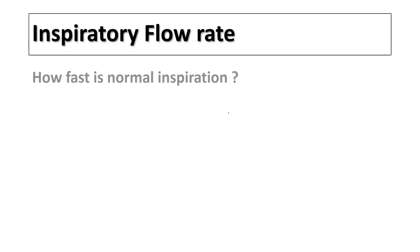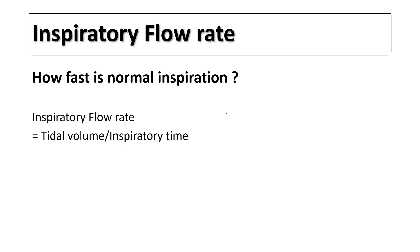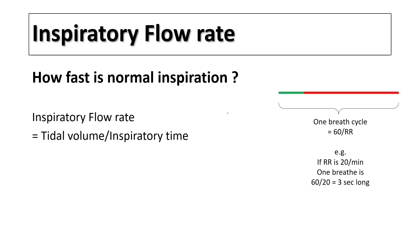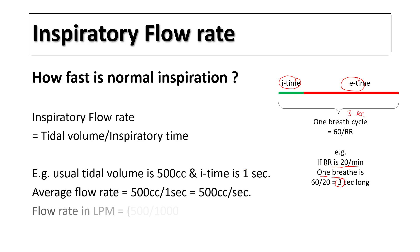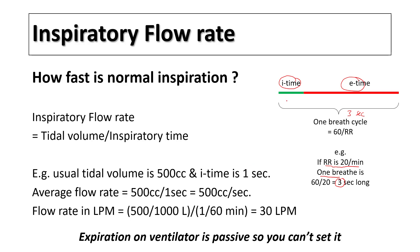Inspiratory flow rate is how fast you take the tidal volume, so inspiratory flow rate equals tidal volume divided by inspiratory time. This represents your breathing cycle, constituting your inspiratory time and your expiratory time. For example, if your breathing rate is 20 times a minute, your one breath cycle is around three seconds long. If your tidal volume is 500 cc and your inspiratory time is one second, the average flow rate would be around 500 cc per second, or about 30 liters per minute. Expiration on the ventilator is passive, so you cannot set it.